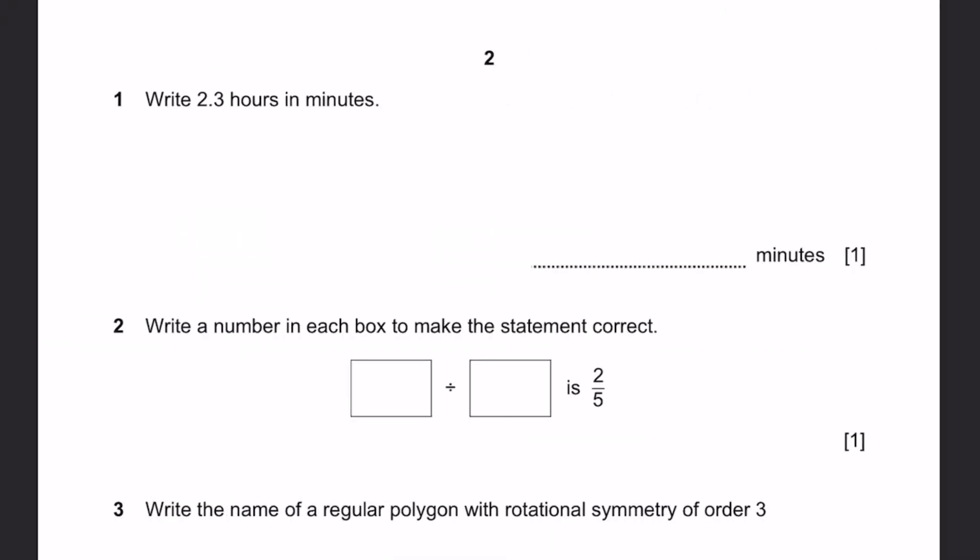Question 1. Write 2.3 hours in minutes. So converting from hours to minutes, just multiply by 60. That will be 138 minutes. That's our answer.